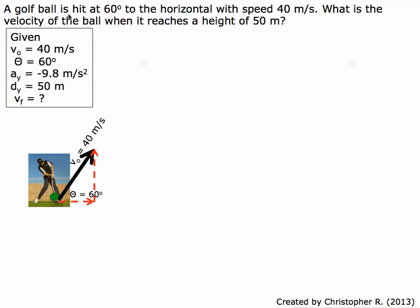A golf ball is hit at 60 degrees to the horizontal with a speed of 40 meters per second. What is the velocity of the ball when it reaches a height of 50 meters?